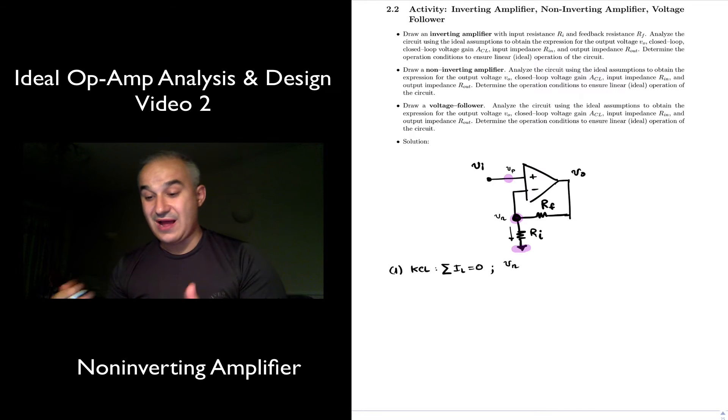basically, step one, Kirchhoff current law, sum of the currents leaving the node equal to zero. So what are the currents? So one current is going down here, and the current is the difference in voltage over the resistance, so Vn, the voltage right here, minus V0, which is ground, divided by Ri, minus 0, divided by Ri,